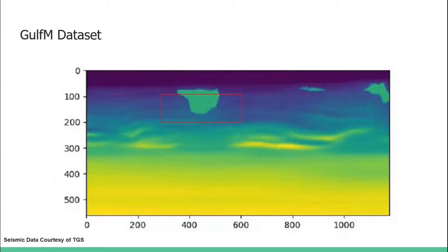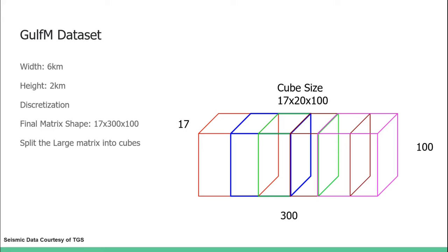Now we elaborate more details on this experiment. The prediction area is obtained from a large velocity map in Gulf of Mexico. After discretization, the target cubes with width 6 kilometers and height 2 kilometers become a 3D matrix with shape 17 by 300 by 100. Then we split the large matrix into small cubes with shape 17 by 20 by 100. We randomly sample 30% of the cubes for training and then do inference on the whole area.